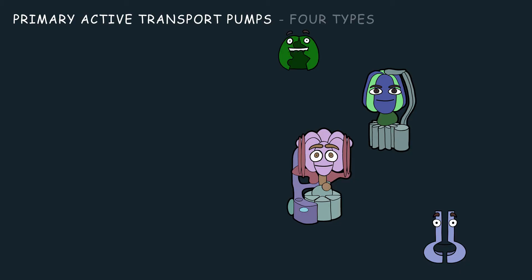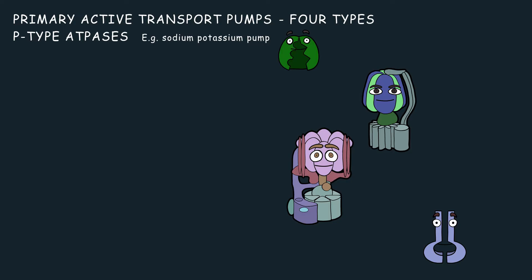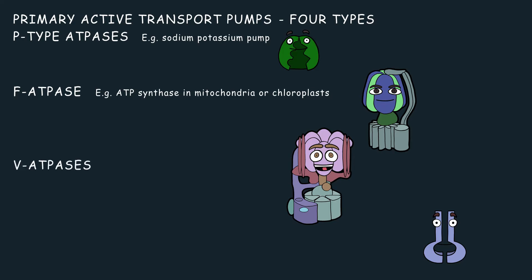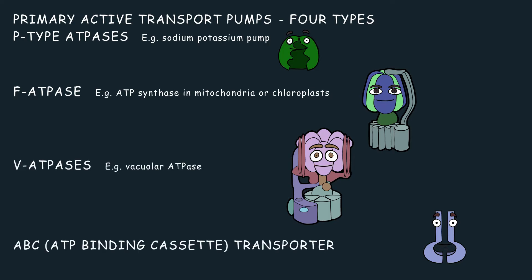There are four types of primary active transporters: P-type ATPases, such as the sodium-potassium pump; F-ATPases, such as ATP synthase in mitochondria or chloroplasts; V-ATPases, such as vacuolar ATPase; and ABC transporters, which stands for ATP binding cassette transporters, such as MDR.